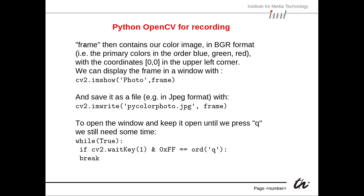After the cap.read() call, 'frame' contains our color image in BGR format — a peculiarity of OpenCV where it stores blue, green, then red as the primary colors in that order. The coordinates (0, 0) are in the upper left-hand corner, which is also typical for OpenCV.